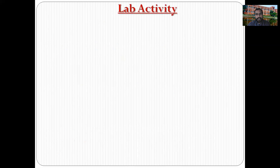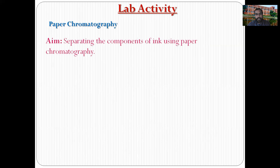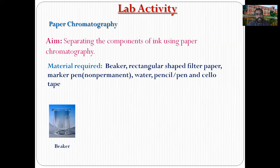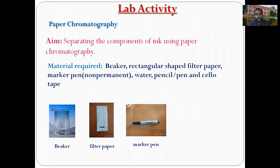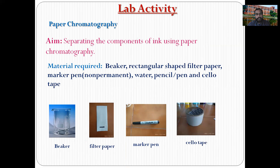Lab activity of paper chromatography. Aim: separating the components of ink using paper chromatography. Materials required: beaker, rectangular shaped filter paper, marker pen, water, pencil or pen, and cello tape. These are very simple materials, and using them we are able to do the paper chromatography lab activity.